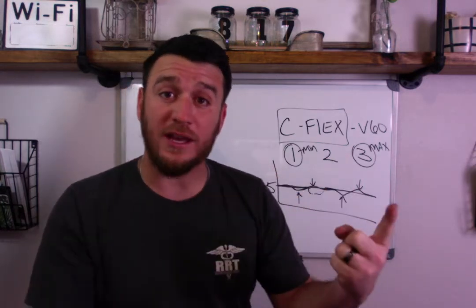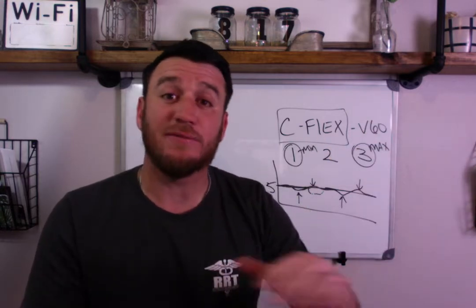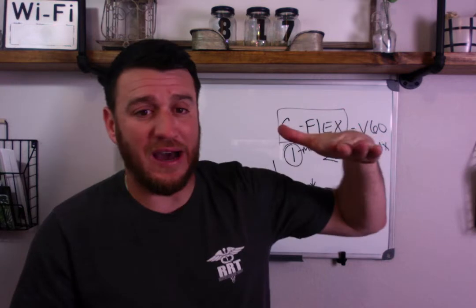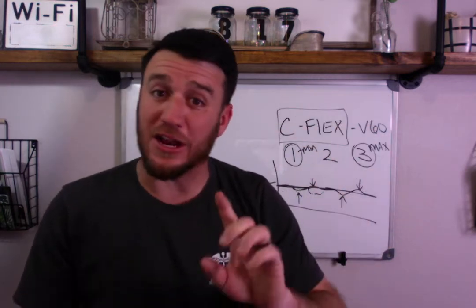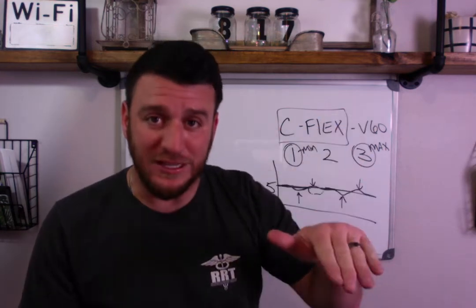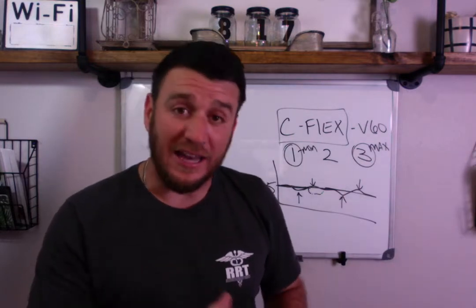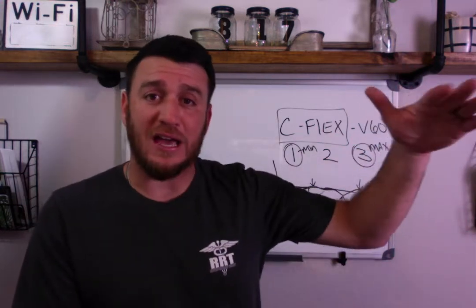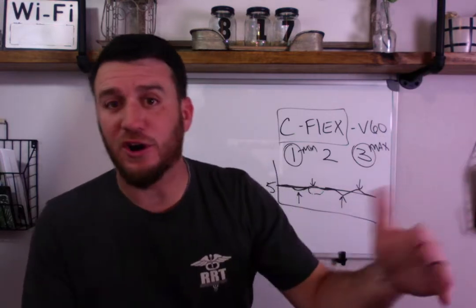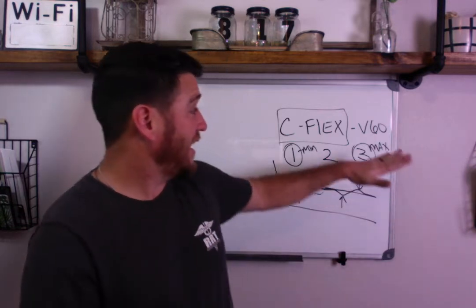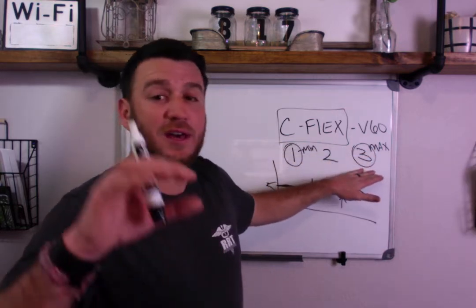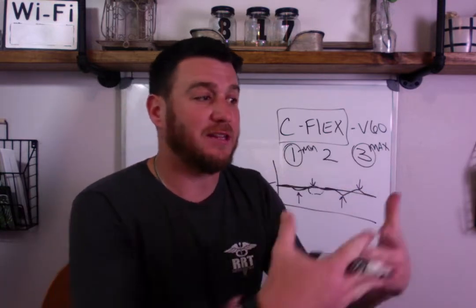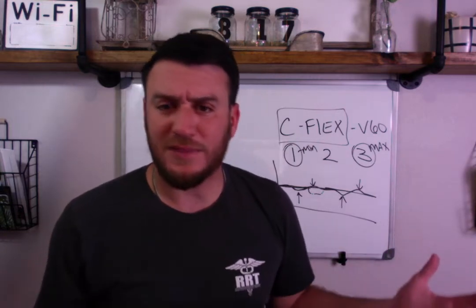A C-Flex setting of one gives you a very minimal drop in pressure. Do not confuse this with the idea that C-Flex of one means if you're at CPAP of five it drops to four — that's not what I'm saying. It also doesn't sustain there on exhalation; it only briefly drops at the beginning of the expiratory phase and then returns back to the CPAP setting. If you have it set on three, you may go from five to two, or five to three, or five to 3.5. With a C-Flex of three and CPAP of eight, three gives you the max relief in pressure at the start of exhalation.